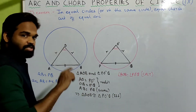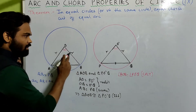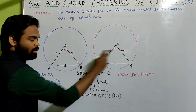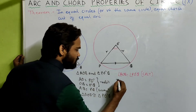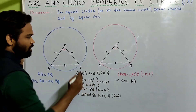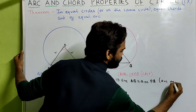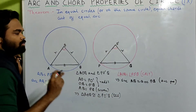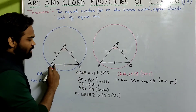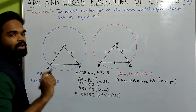Now we just used the arc property which says that in equal circles, if the angles subtended by two arcs are equal, then the arcs are of equal length. Therefore arc AB equals arc PQ by the arc property. So we proved that if the chords are of equal length in two equal circles or in the same circle, then they cut off equal arcs.